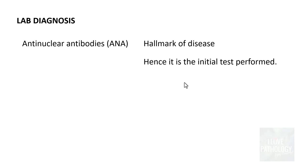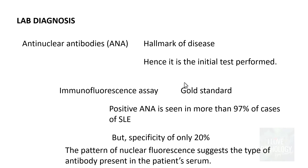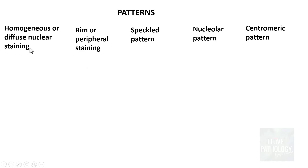Anti-nuclear antibody testing is the initial test performed when SLE is suspected. Demonstration of ANA by immunofluorescence assay is the gold standard. Positive ANA is seen in more than 97% of cases of SLE, but it is not specific — specificity is only around 20% because ANAs can be seen in other disorders as well. While examining the ANA pattern by immunofluorescence, the pattern of nuclear fluorescence suggests the type of antibody present. Patterns include homogeneous or diffuse, peripheral or rim, speckled, nucleolar, and centromeric.